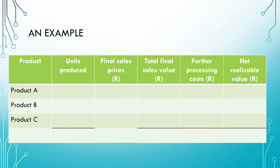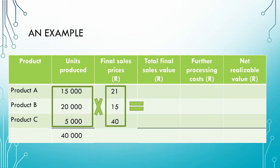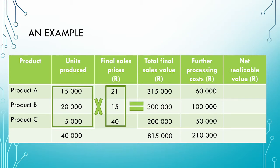Our first step is to calculate each product's net realizable value. We take the units produced and multiply by the final sales price — and it is the final sales value, not the sales value at the split-off point — to get the total final sales value. We then identify the further processing costs, which were given in the scenario. To calculate the net realizable value, we simply deduct the further processing costs from the total final sales value.